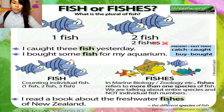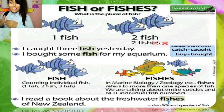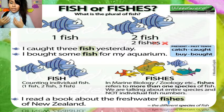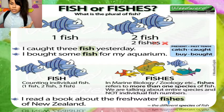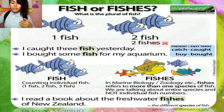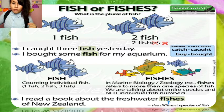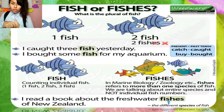When counting individual fish: one fish, two fish, three fish, etc. Notice that 'fishes' — when you use 'fishes,' it's specifically in the context of biology or zoology, and 'fishes' refers to more than one species of fish.